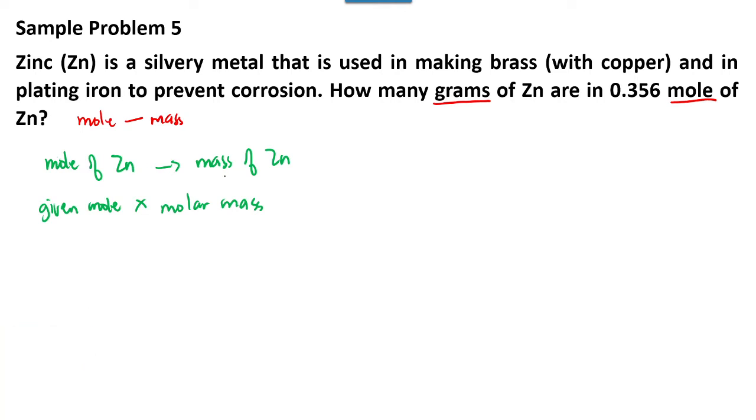Okay, so we have 0.356 mole of zinc times the molar mass. So we have here grams, then below mole: 65.38 grams of zinc over one. Okay, so don't forget to cancel the unit.